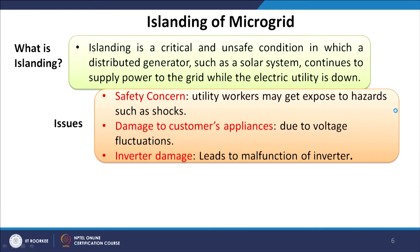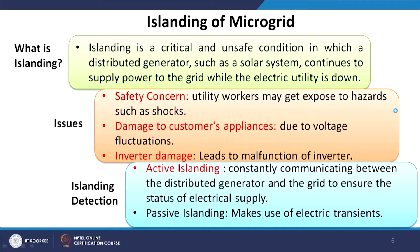The main issues with islanding include: safety concerns — utility workers may be exposed to hazards such as shocks, and damage to customer appliances may occur due to voltage fluctuations, as well as inverter damage and malfunction. Islanding detection is also a concern. There are two major methods: active islanding, which constantly communicates between the distributed generator and the grid to ensure the status of electricity supply; and passive islanding, which uses electric transients to determine whether islanding has occurred.